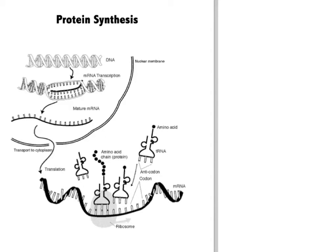Protein synthesis is the process by which your cells make protein, and it begins in the nucleus. Here we have the nuclear membrane — this is the nucleus of the cell. We have the DNA, and the first thing that has to happen in protein synthesis is the DNA has to uncoil, very similar to replication. The hydrogen bonds between the nitrogen bases have to break, and the DNA starts to uncoil.